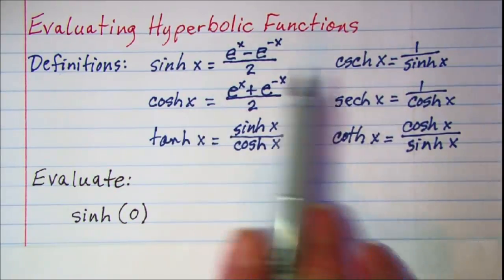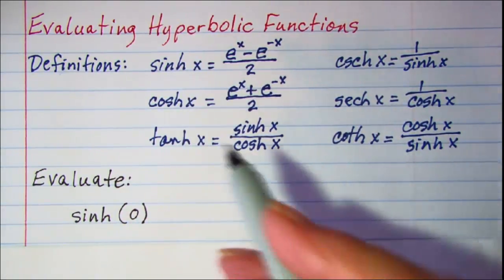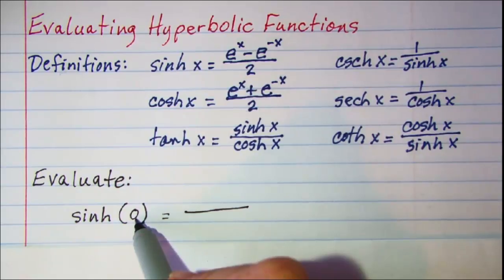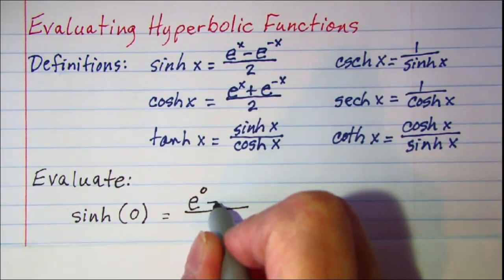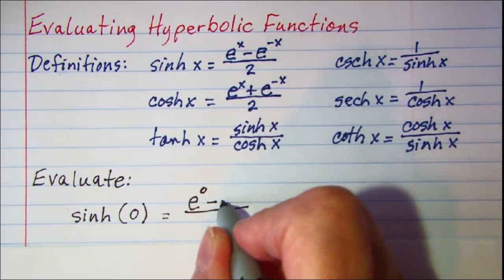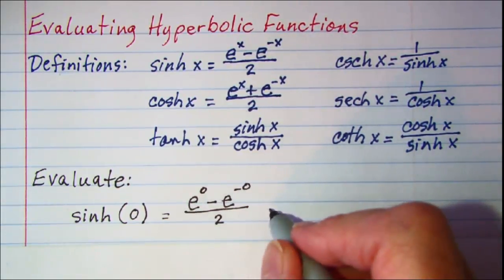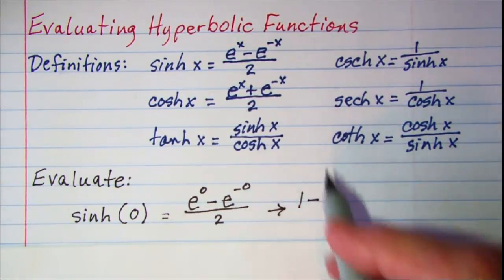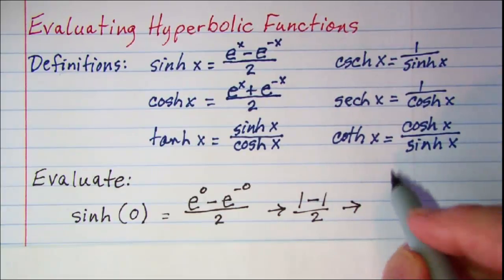We will use these definitions to evaluate. First, let's evaluate the hyperbolic sine of zero. By definition, the hyperbolic sine is e to the x, so with x equal to zero: e to the zero minus e to the negative zero, divided by 2. Since e to the zero equals 1, this is 1 minus 1 divided by 2, so the hyperbolic sine of zero is zero.